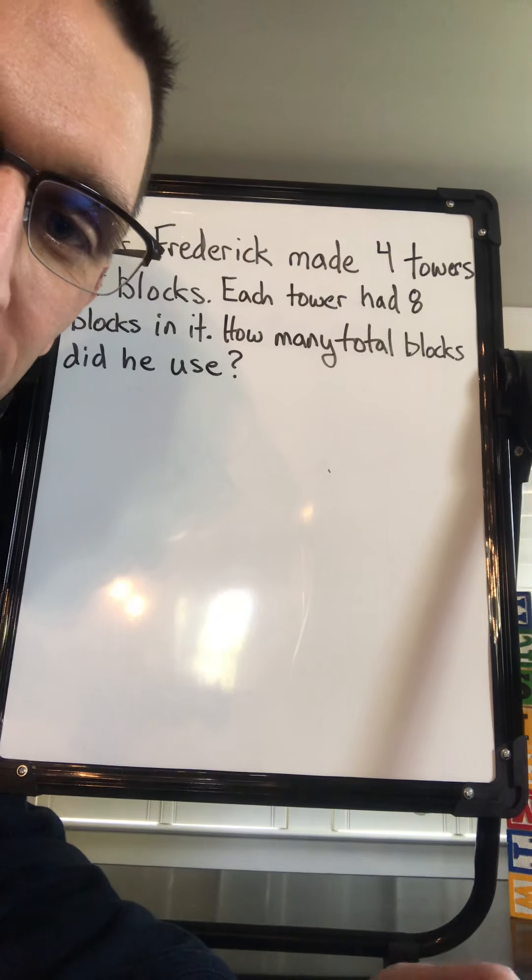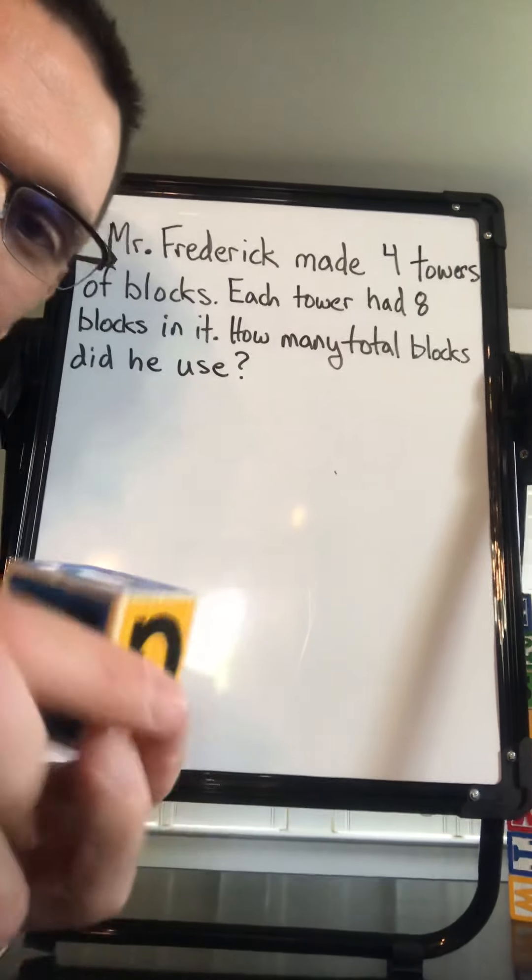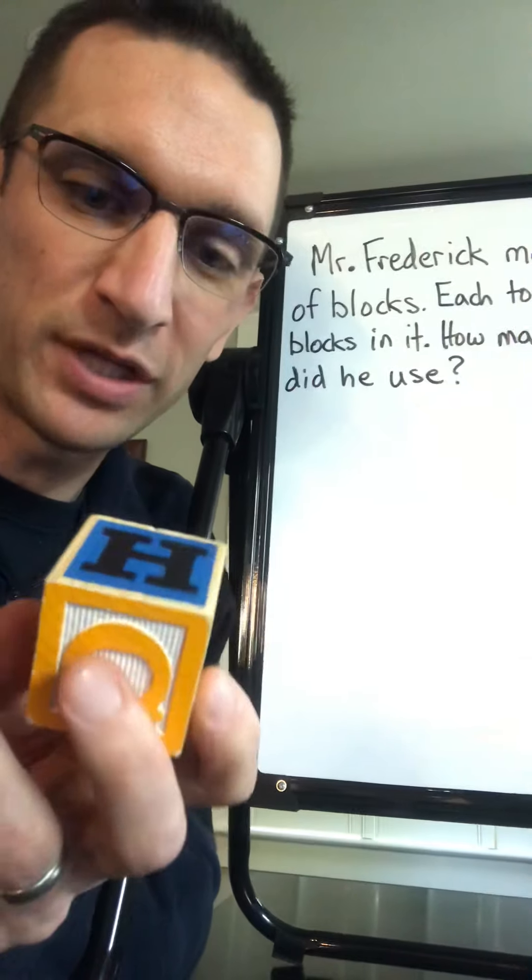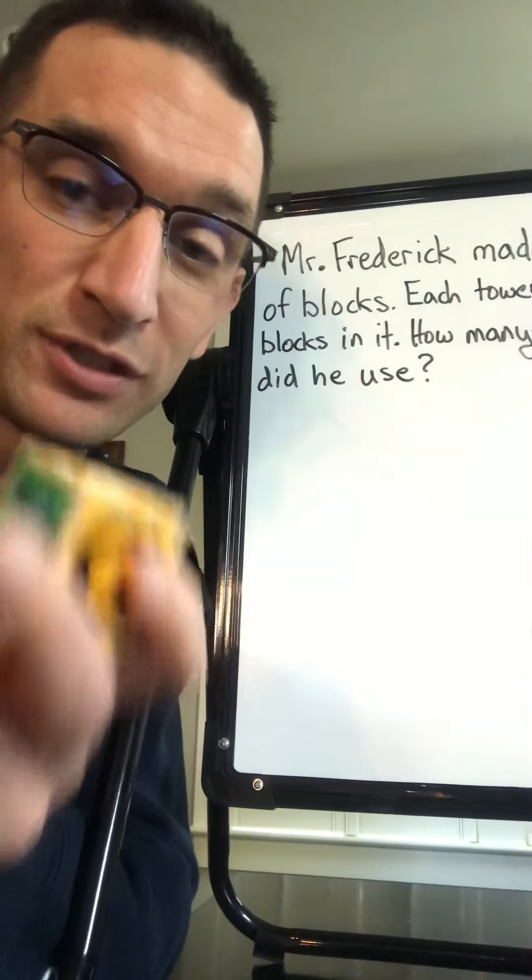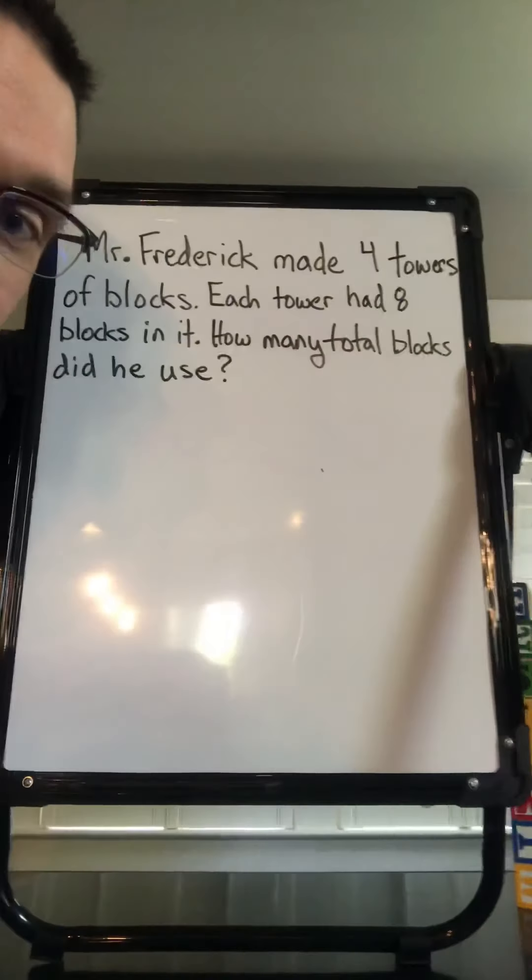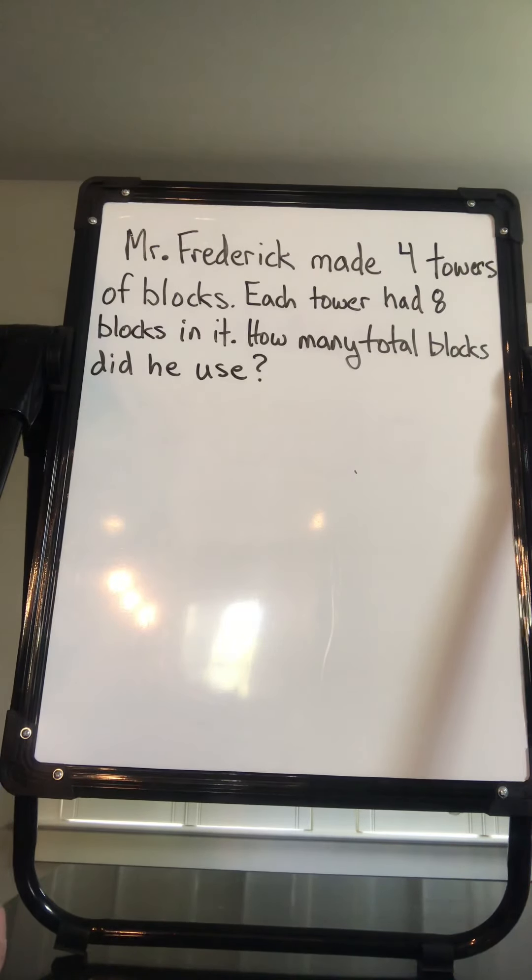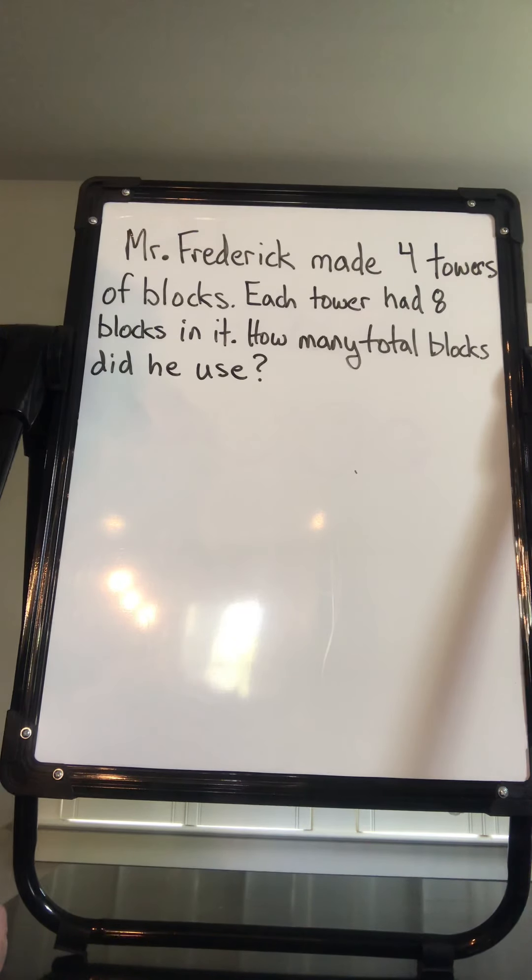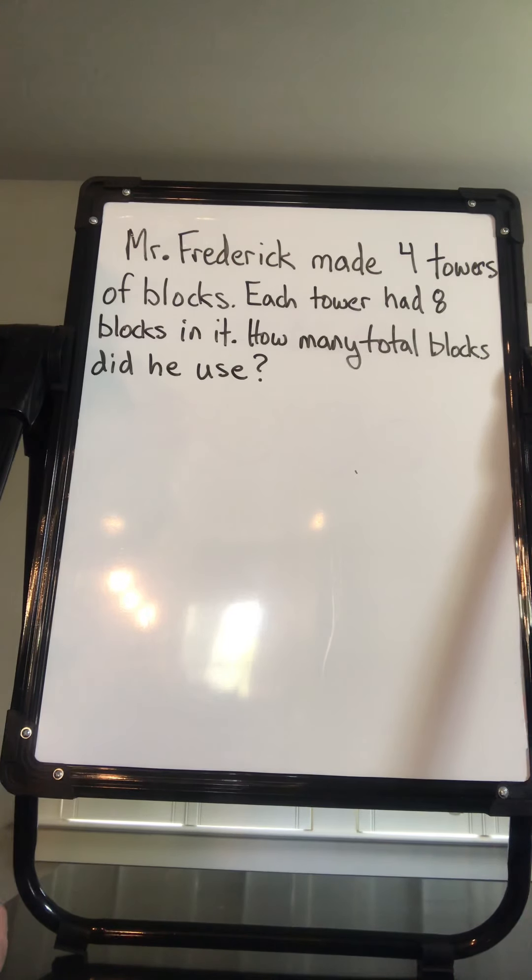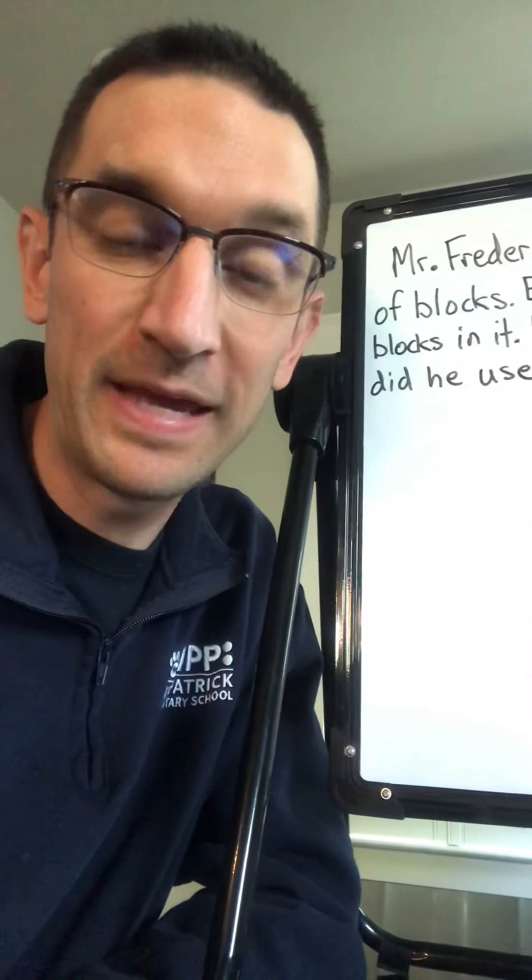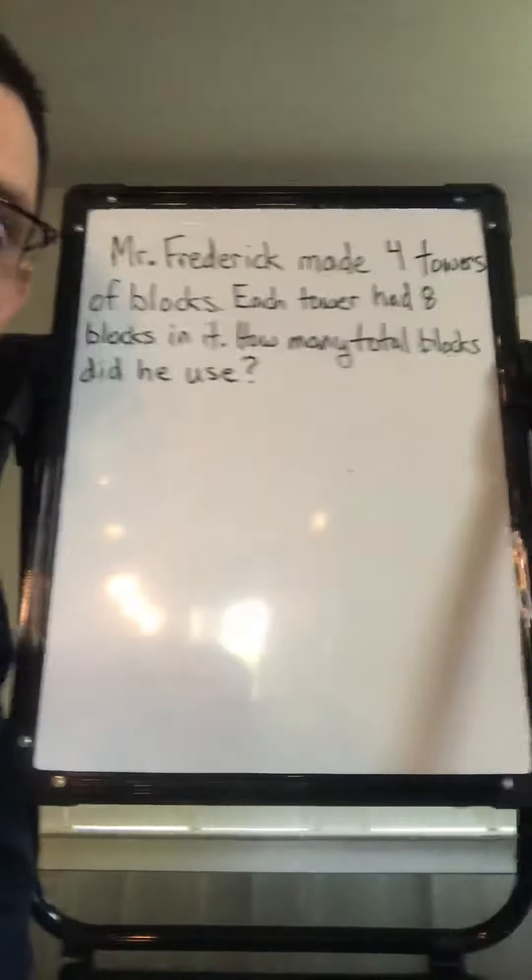This problem, the cool thing about math is that you have math all around you at home even if you're not in school. So this problem is about blocks. My daughter loves to play with these and sometimes I'll play with her. We make towers all the time. Here it goes: it says Mr. Frederick made four towers of blocks. Each tower had eight blocks in it. How many total blocks did he use? I'm going to read it one more time. Mr. Frederick made four towers of blocks. Each tower had eight blocks in it. How many total blocks did he use? Now feel free to pause the video right here while you do your work, and then we're going to go through the problem together.